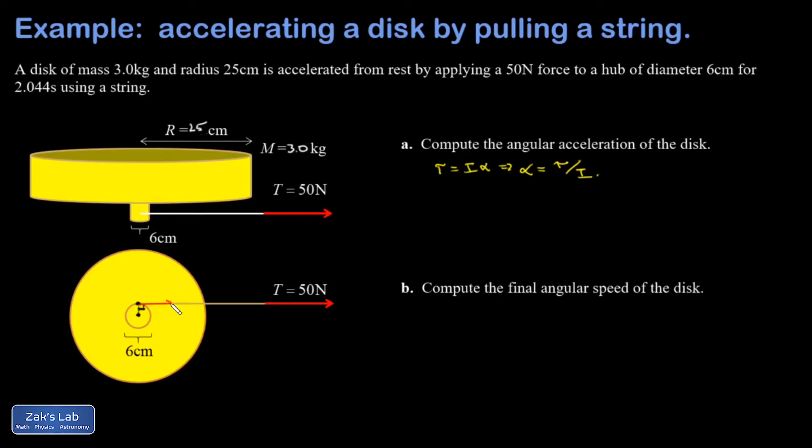And because that string is coming off tangentially, I'm going to write in 50 Newtons here. Because that string is coming off tangentially, it's automatically perpendicular to the lever arm, which is a radius of that circle. So my torque is going to be 50 Newtons of force - that's already the perpendicular force - multiplied by the size of the lever arm or the radius of the hub.